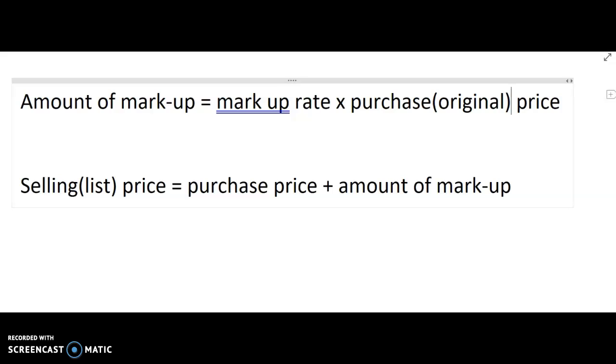So if we think about the purchase price, I own a business, I purchase an item at a certain amount. Whatever my markup percentage is, I multiply that purchase price by that rate as a decimal, and that gives me my amount of markup. Once I have that amount of markup, then I add that to the purchase price, and thus purchase price plus however much I mark it up gives me my selling price. Hopefully that makes a little bit of sense.